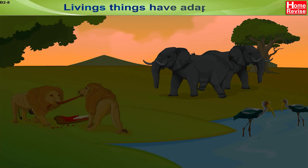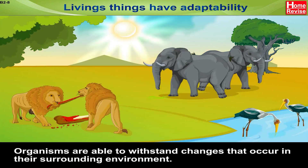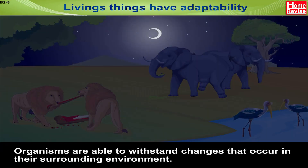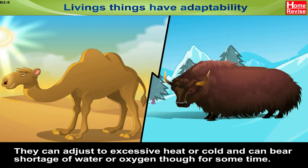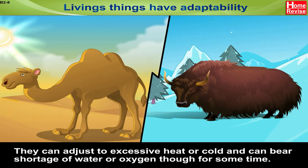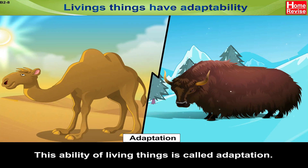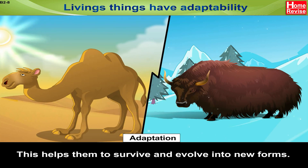Living things have adaptability. Organisms are able to withstand changes that occur in their surrounding environment. They can adjust to excessive heat or cold and can bear shortage of water or oxygen, though for some time. This ability of living things is called adaptation. This helps them to survive and evolve into new forms.